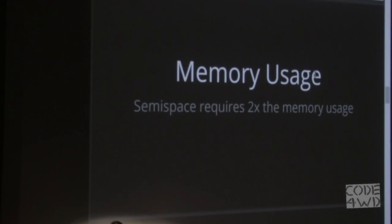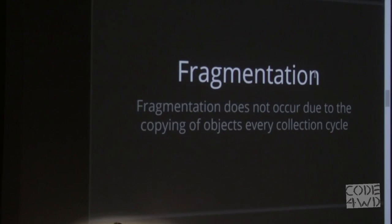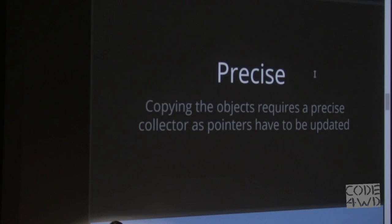The downside of the semi-space collector is that it's fairly memory-inefficient — you need twice the memory in the worst case. The benefit is it can be very fast: you don't have to explicitly mark objects, reclaiming memory is simply overriding what was left, and fragmentation is dealt with automatically because objects are copied. It requires that the collector is precise — if memory were moved around and there was some pointer in C code that wasn't updated, all hell could break loose.